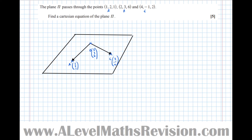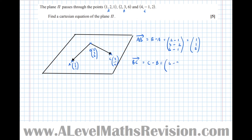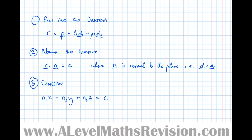Direction BC = C − B = (4−2, −1−3, 2−6) = (2, −4, −4). So we have two direction vectors of the plane. To get the Cartesian form, we need the normal vector, which is perpendicular to both directions, so we find the vector product of the two direction vectors.